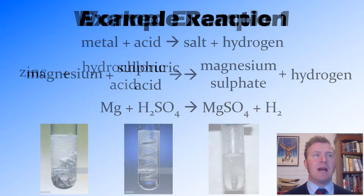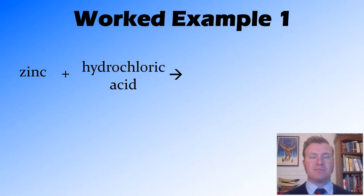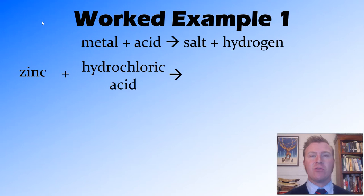So we'll now look at a couple of examples. This one is zinc and hydrochloric acid. First we need to recognize that this is an acid-metal reaction. We then need to recall the general equation for this reaction, which is acid and metal reacts to form salt and hydrogen. So we know we're going to have hydrogen, we can put that in straight away.